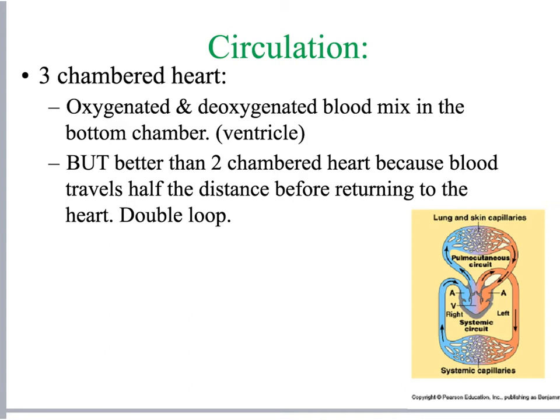When comparing the heart of a fish versus that of a frog or amphibian, frogs and amphibians have a three-chambered heart, which is an improvement from the fish's heart. It does a better job of separating oxygenated and deoxygenated blood, and reduces the time and distance for blood returning to the heart because of its double loop, making it a more efficient process than the fish's single loop.